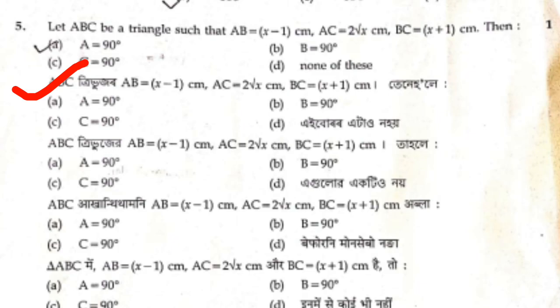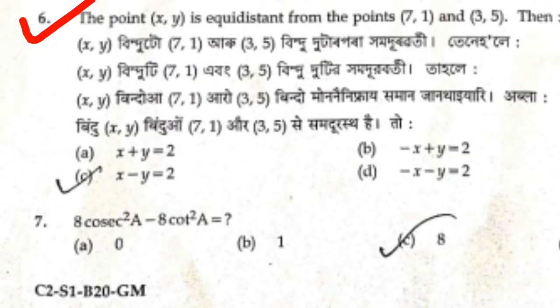Number question: In a triangle, AB is equal to x minus y cm, AC is equal to root x cm, BC is equal to x plus 1. The answer options are A=90 degrees, B=90 degrees, C=90 degrees. Next: if xy equals 7, and the options for x plus y or x minus y are given, the right answer is C: x minus y equals 2.